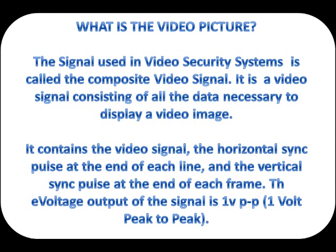The signal used in video security systems is called the composite video signal. It is a video signal consisting of all the data necessary to display a video image. It contains the video signal, the horizontal sync pulse at the end of each line, and the vertical sync pulse at the end of each frame. The voltage output of the signal is 1VPP.